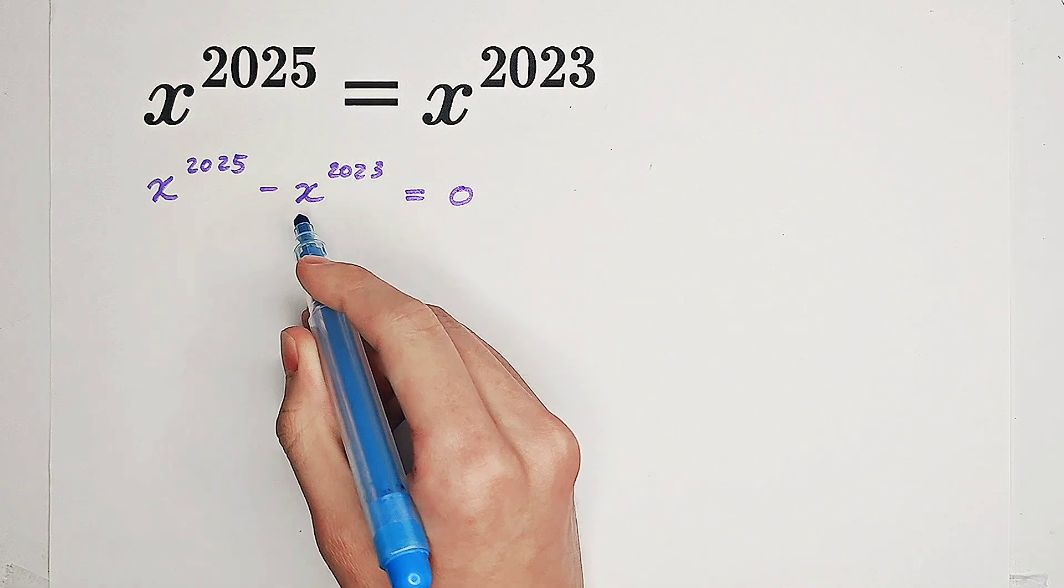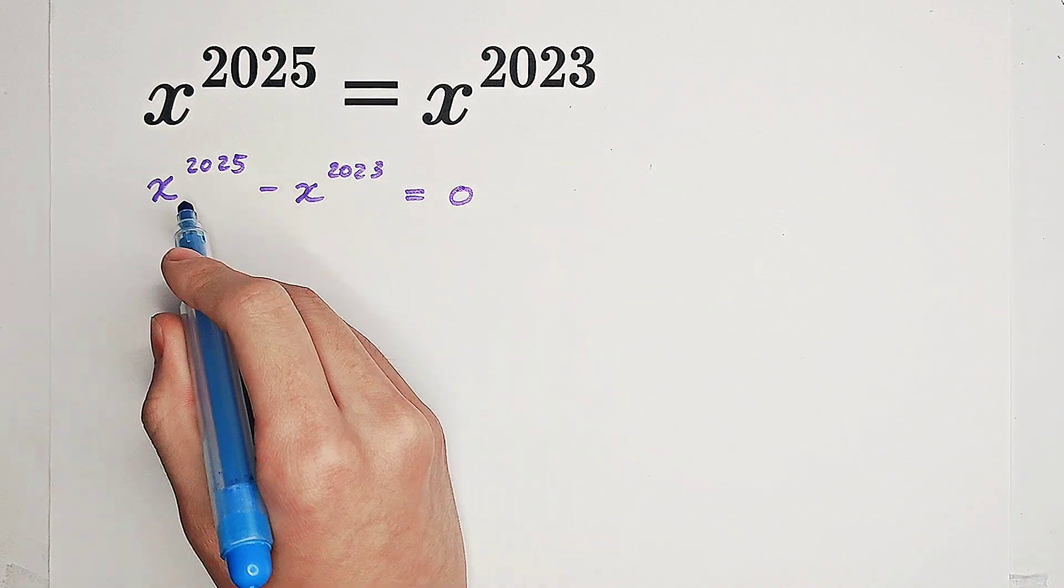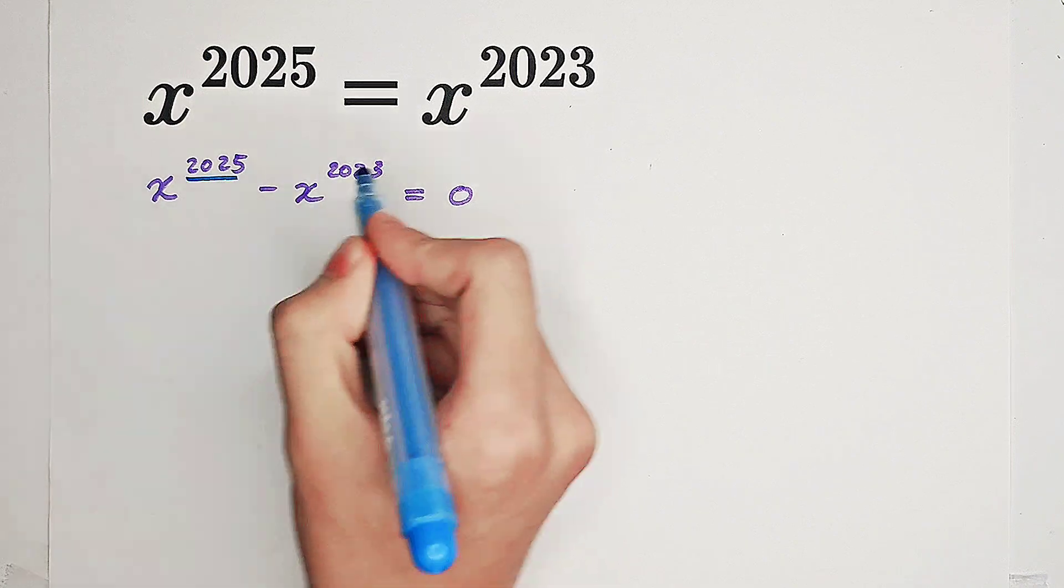Now you see x^2023 and x^2025. So what can we do?